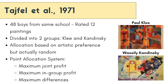As the name 'minimal group paradigm' suggests, the participants — 48 boys from the same school — were divided into two groups: either belonging to the Klee group or the Kandinsky group, and were told that the categorization was based on their artistic preference from earlier ratings, even though this categorization was mere random allocation to either group. This set the minimal parameters to test for the inter-group behaviors that could be observed from this procedure. Participants were then asked to award points to two boys — one from the in-group and one from the out-group.